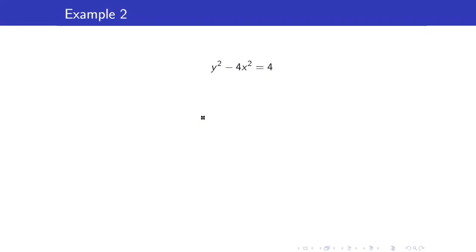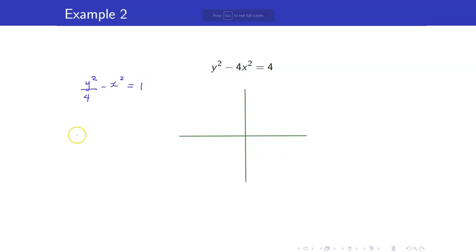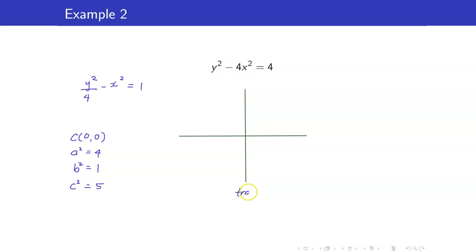Let us also sketch the equation 4Y² − X² = 4, which is equivalent to Y²/1 − X²/4 = 1. The center is the origin. Our A² = 1, B² = 4 — wait, since Y appears first, A² = 4 and B² = 1. So A = 2, B = 1, and C = √5. The transverse axis is the Y-axis.